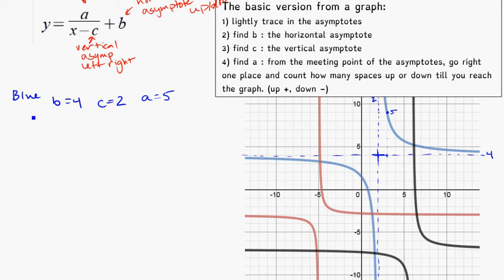Now that you've got that information, let's just plug it in. y is equal to 5, a is 5, x minus c, which is 2, and then plus b, which is 4. So that's our equation.